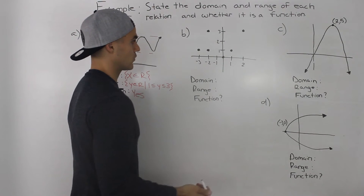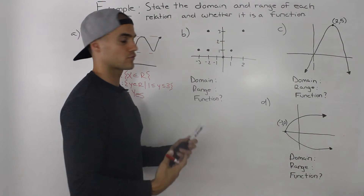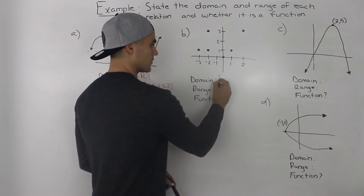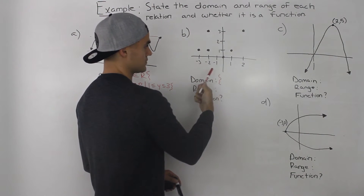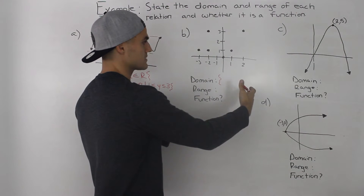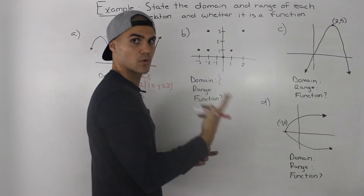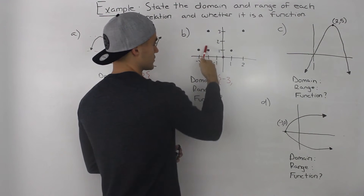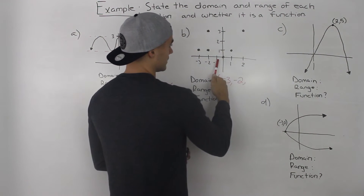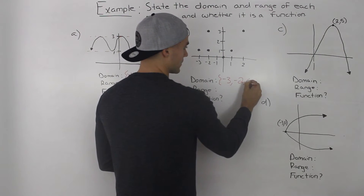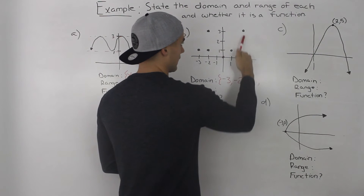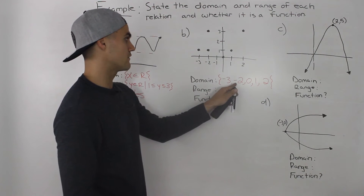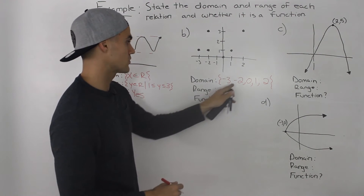Moving on to part b, we have a graph with a set of coordinates. This is very similar to finding the domain and range from a table of values or a list of coordinates. The domain is the set of x values, written from lowest to highest, and any x values that repeat we only write once. Going left to right: negative 3 comes first, negative 2 appears twice but we only write it once, there is no value for negative 1, then 0, 1, and 2 appear.